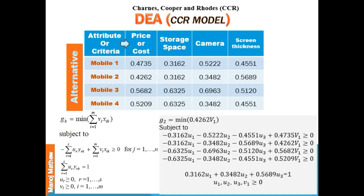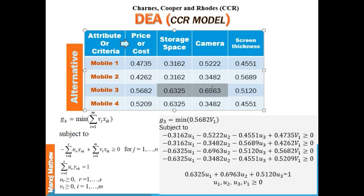Similarly, for the second DMU, that is mobile 2, the LP model will be as shown. The only change will be in the objective function — the input value will be replaced by mobile 2's value — and in the equality constraint, the Y_rk values for mobile 2 will be used. Similarly, for mobile 3, the linear programming model uses mobile 3's input value in the objective function and mobile 3's Y_rk values in the equality constraint. For the fourth DMU, that is mobile 4, the linear programming model is formulated in the same way.